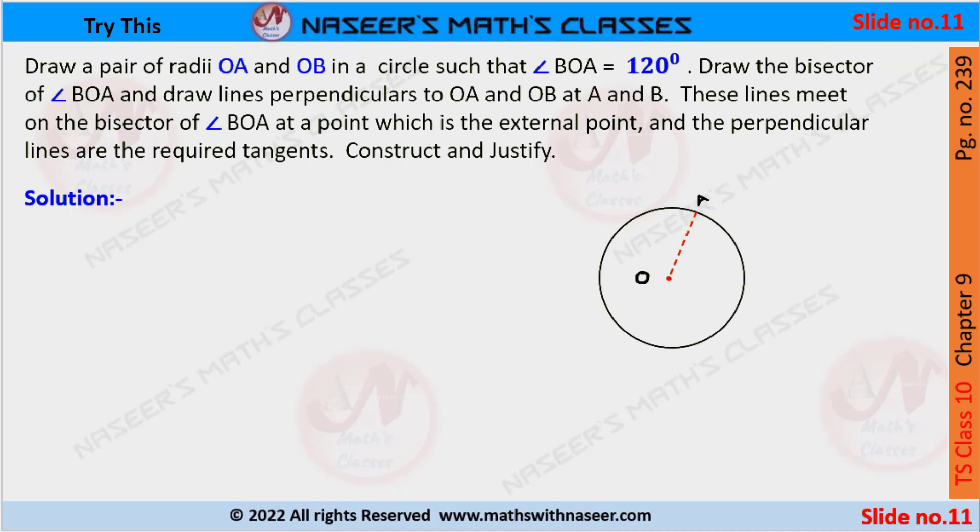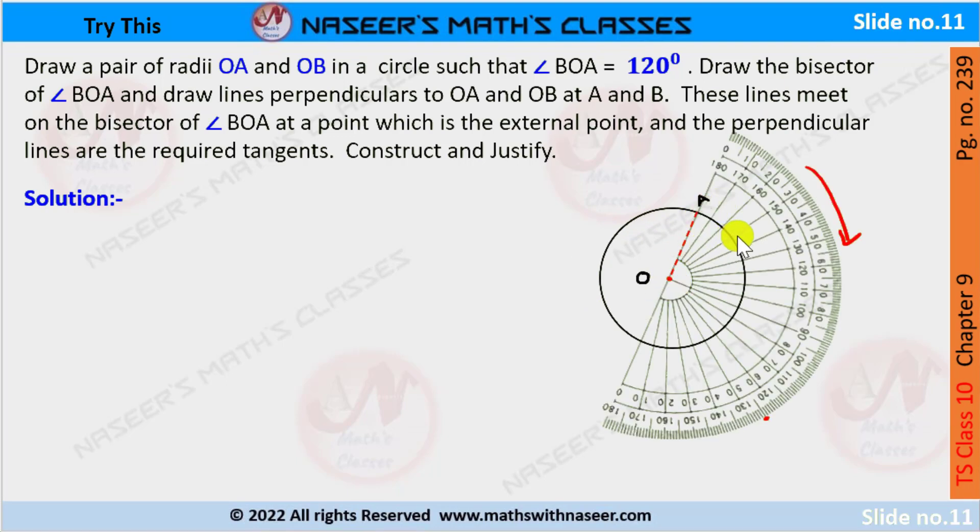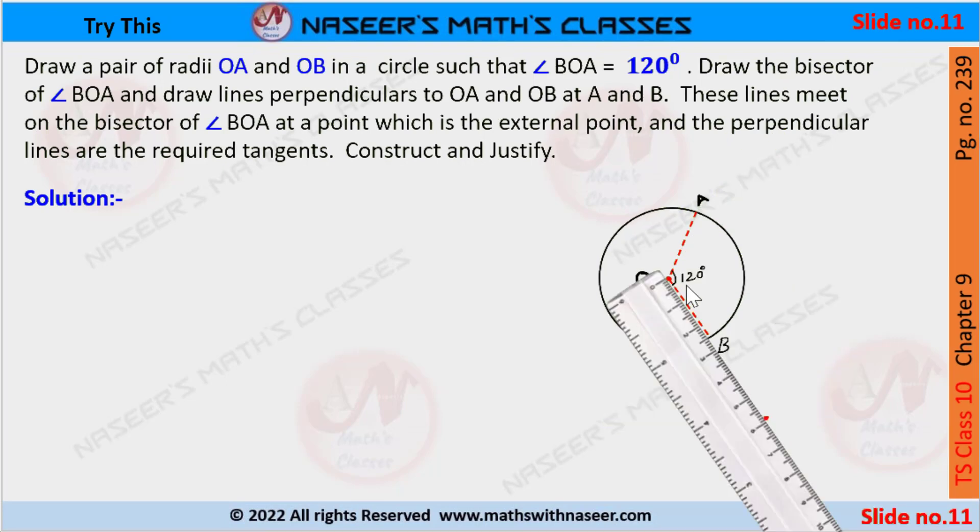First, we draw a circle with center O and radius OA. Using a protractor with OA as the base, make an angle of 120 degrees. After making 120 degrees with OA as the base, draw radius OB. Using the compass with center O, draw an arc.